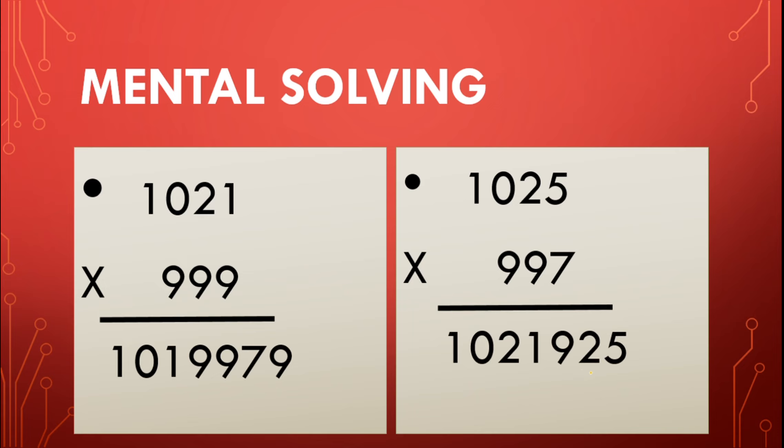Answer is 1,021,925. How? Let's see. 1,025 and 997. The base would be 1,000. This is plus 25, and the down one is minus 3. So 1,025 minus 3 is equal to 1,022, and 997 plus 25 is also 1,022.